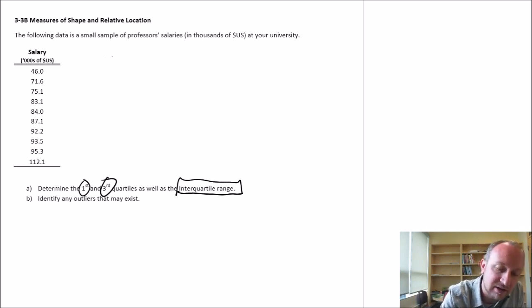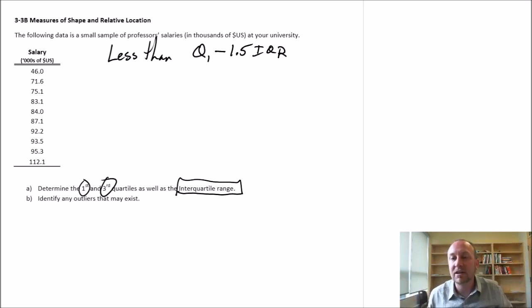And then we have a basic rule of thumb to say an observation is an outlier if it is less than the value of the first quartile minus 1.5 times the interquartile range. So that gives us a lower bound. So if we see an observation that is smaller than that, it means that it's really small relative to all of the other observations in that data set.